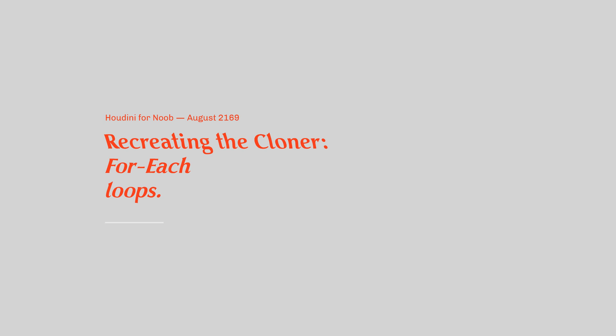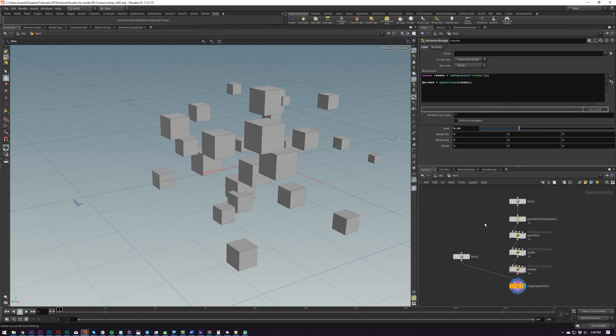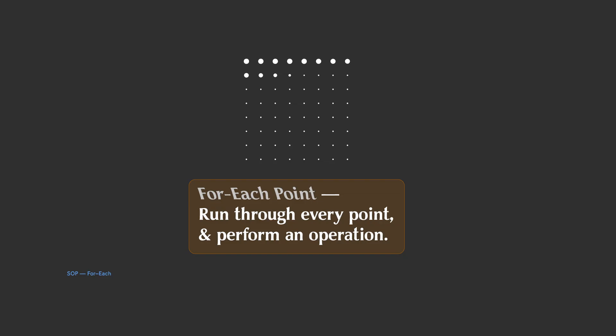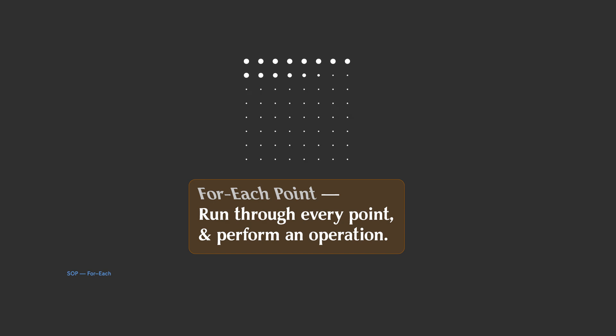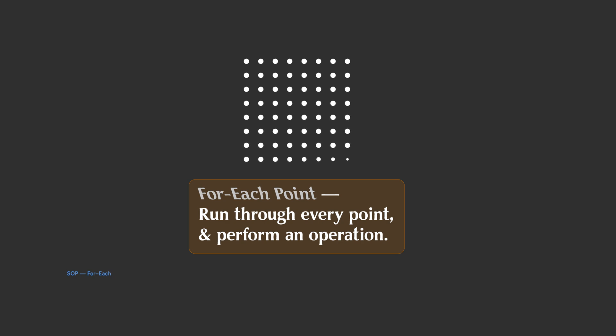Hello audience. This time we're going to be looking at switching between however many objects we want randomly using a foreach loop in our first foray into foreach-ing. Foreach loops are going to take, for example, a point or a bunch of points and run through every single one of them and do something to them. What it does is totally up to us, and we're going to be using it to switch between two different inputs.